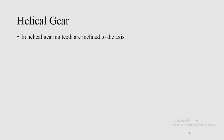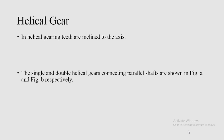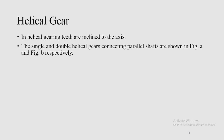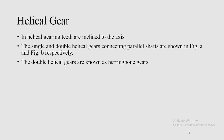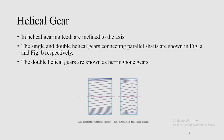In helical gearing, teeth are inclined to the axis — a helix angle is present. Single and double helical gears connecting parallel shafts are shown in figures (a) and (b) respectively. In figure (a) a single helical gear is shown, and in figure (b) a double helical gear is shown. Double helical gears are also known as herringbone gears.